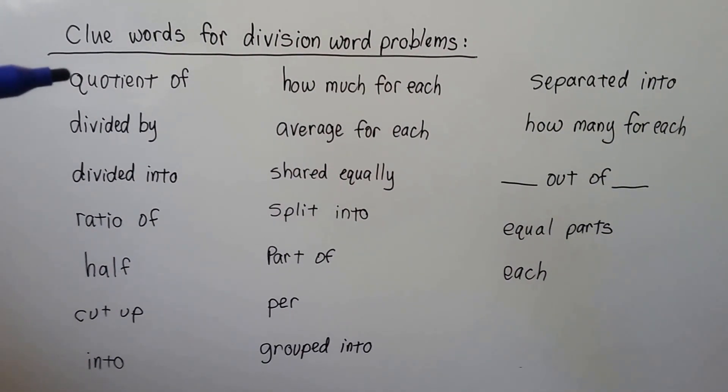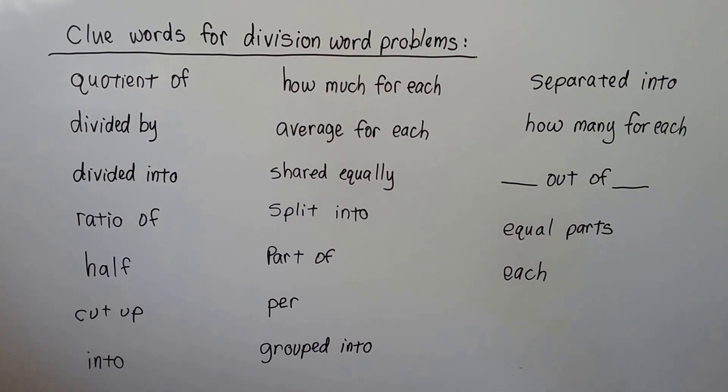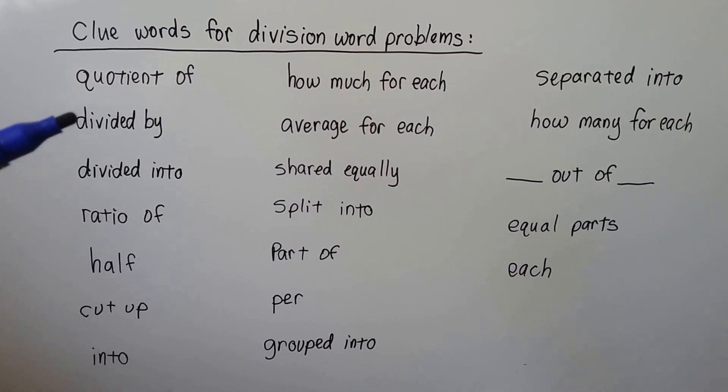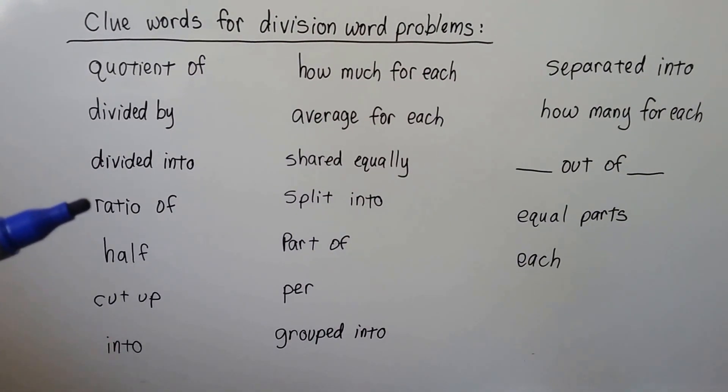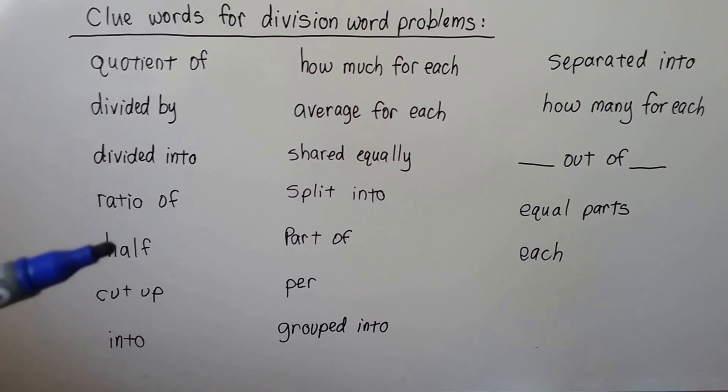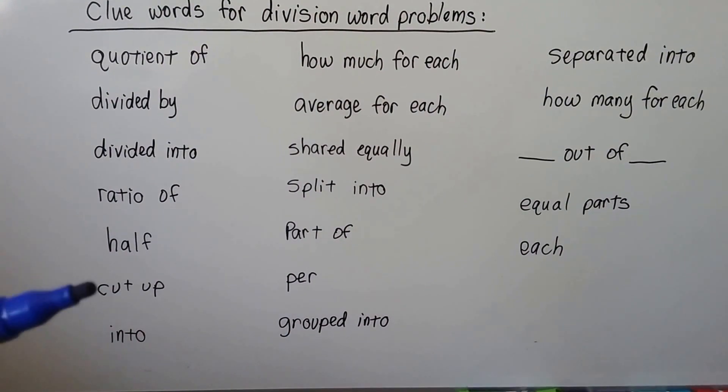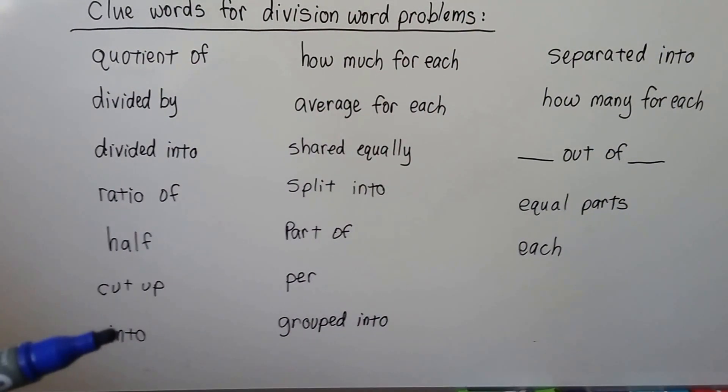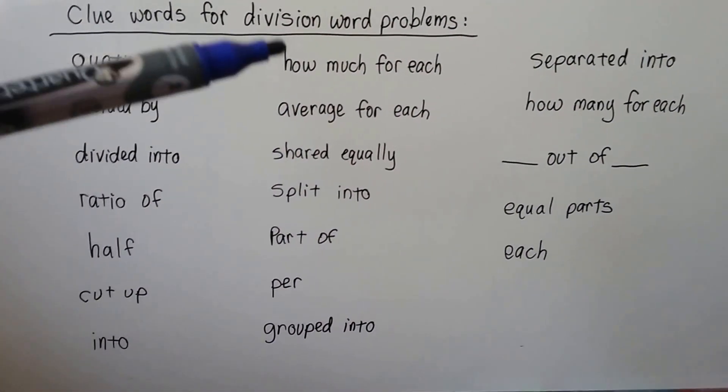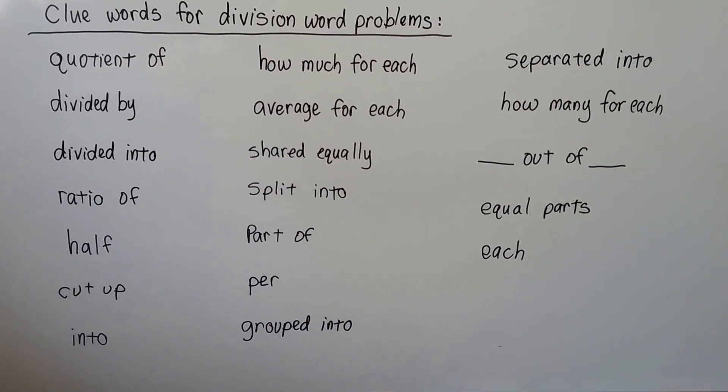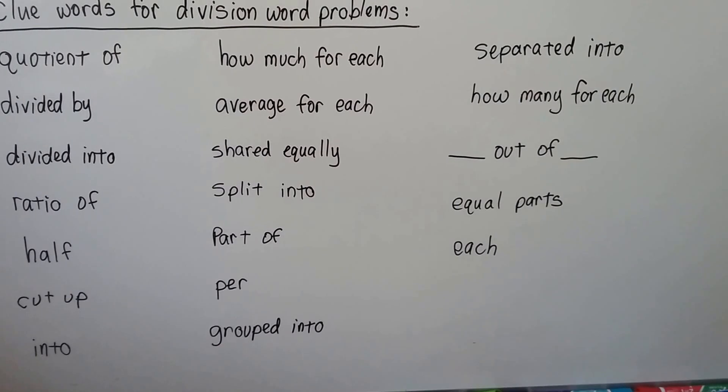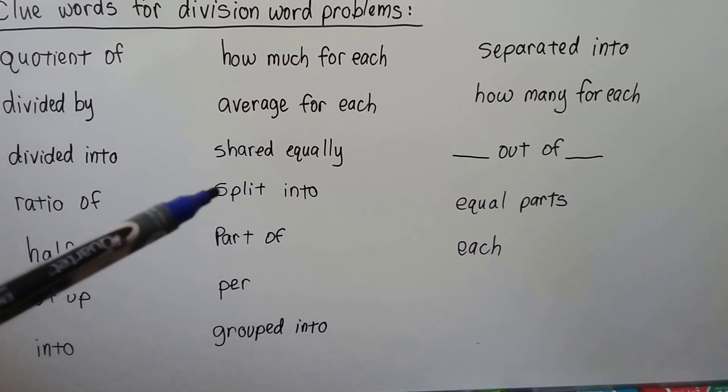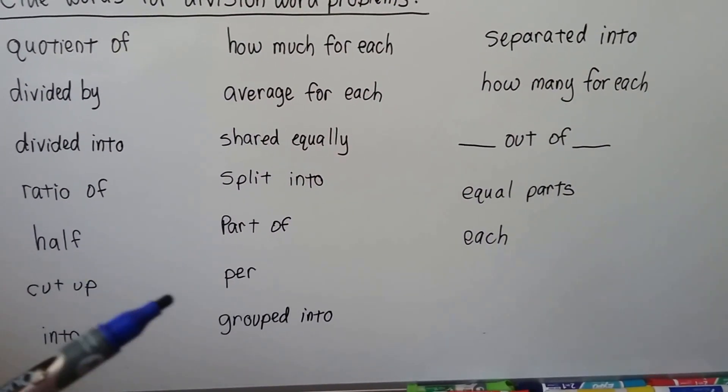It might say the quotient of some number and another number, or it might say a number divided by another number, or divide it into. It might even say the ratio of. It might say half, or something's cut up, or something goes into something. It might ask you how much for each, or the average for each. It might tell you that something is shared equally, or it's split into something, or it's part of something, or it's even per something.